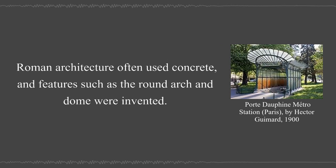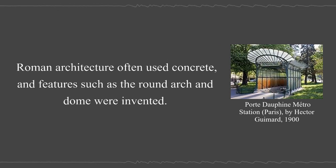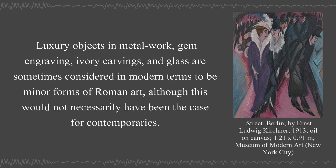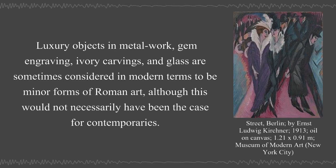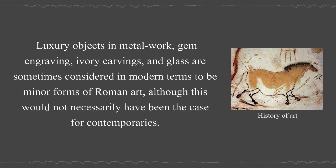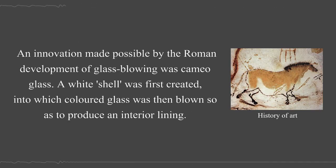Roman architecture often used concrete and features such as the round arch and dome were invented. Luxury objects in metalwork, gem engraving, ivory carvings, and glass are sometimes considered in modern terms to be minor forms of Roman art, although this would not necessarily have been the case for contemporaries.